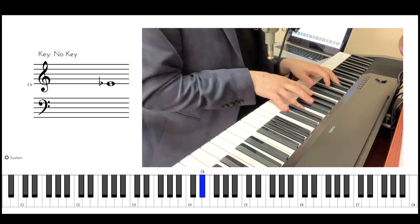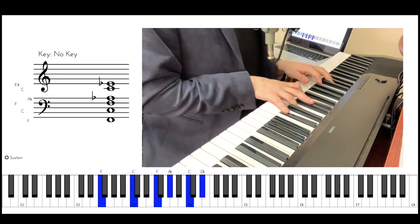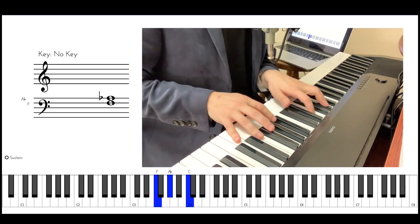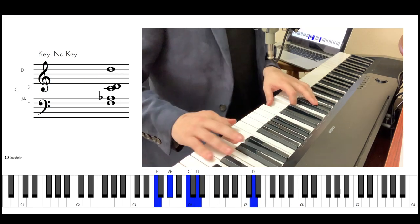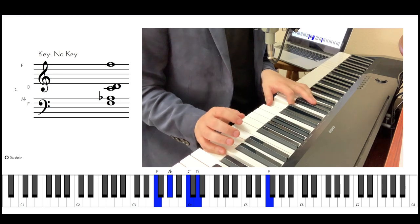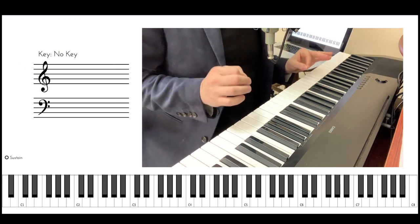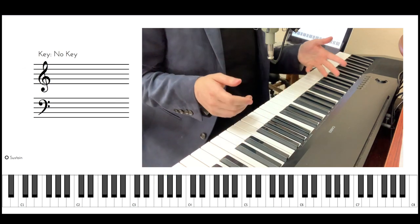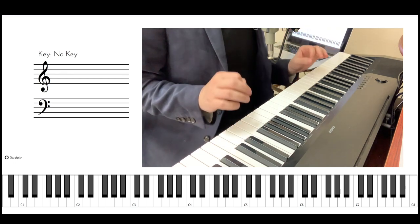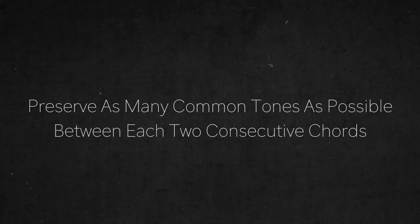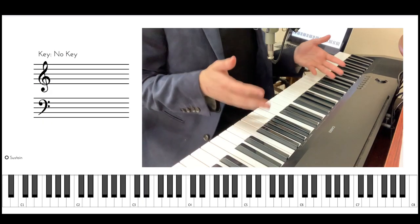The next chord is F minor 7. So is this going to be Aeolian, or is this going to be Dorian? And how should we decide?